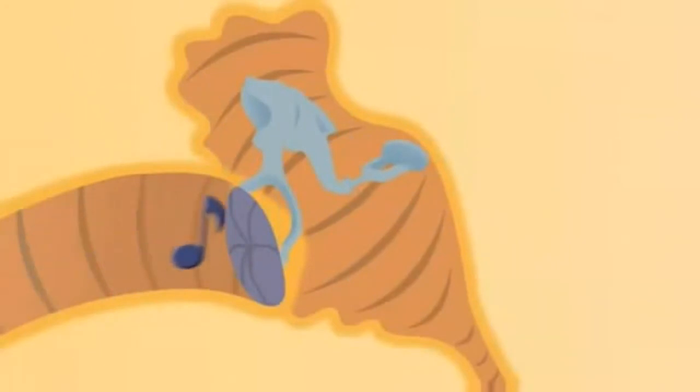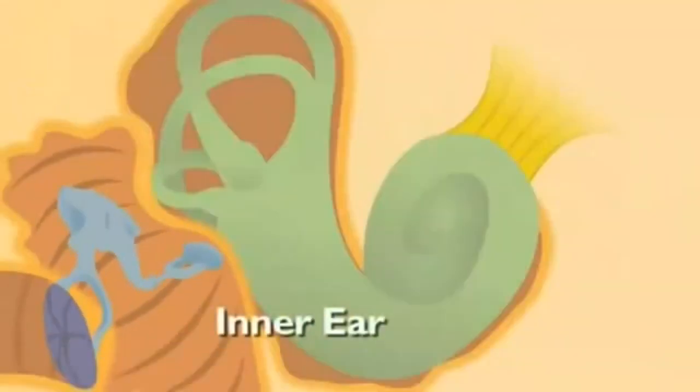When sound enters the middle ear, each of these tiny bones vibrate and pass the sound on further into the inner ear. Like a chain reaction? It kind of is. Now the inner ear is a bit more complex, with lots of little passages. Like a maze? A lot like a maze.